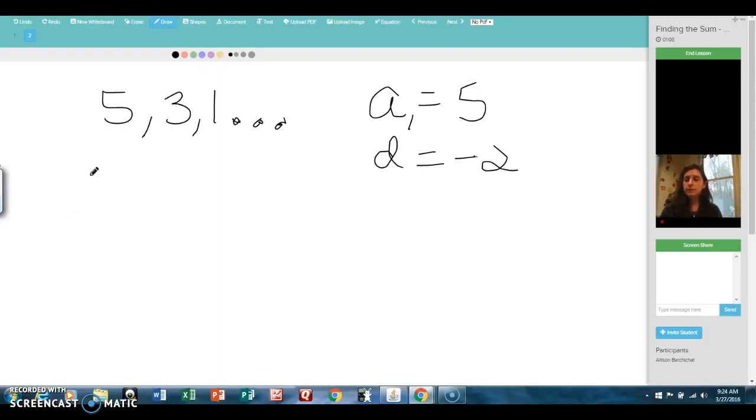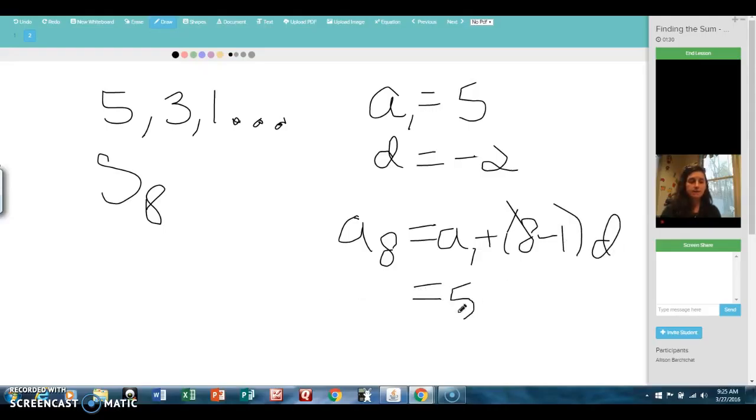So let's use some formulas to find the sum of the first 8 terms. In order to do that, we're going to have to find the 8th term. So let's set up this formula. The 8th term is equal to the first term plus 8 minus 1 times our common difference. So our first term is 5 plus 7 times negative 2. 5 minus 14. So it looks like our 8th term is going to be negative 9.